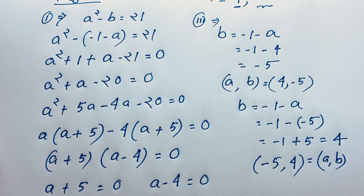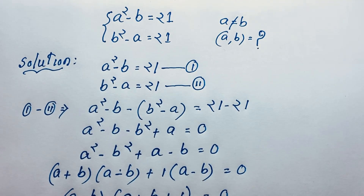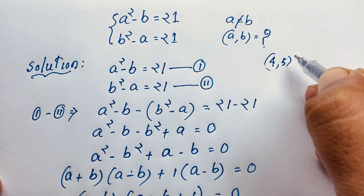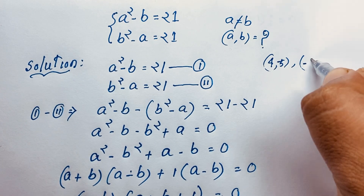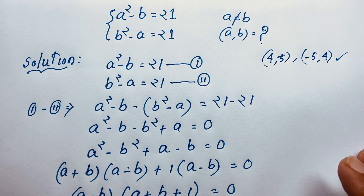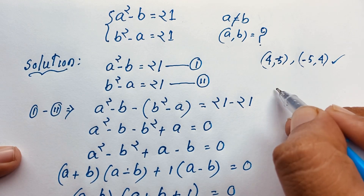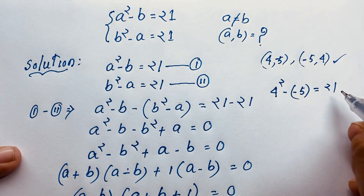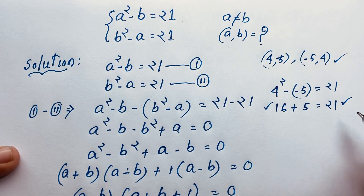Let's verify. We found two solutions: (4, minus 5) and (minus 5, 4). For the first equation with a equals 4: 4 squared minus (minus 5) equals 16 plus 5 equals 21. Left hand side equals right hand side — correct.